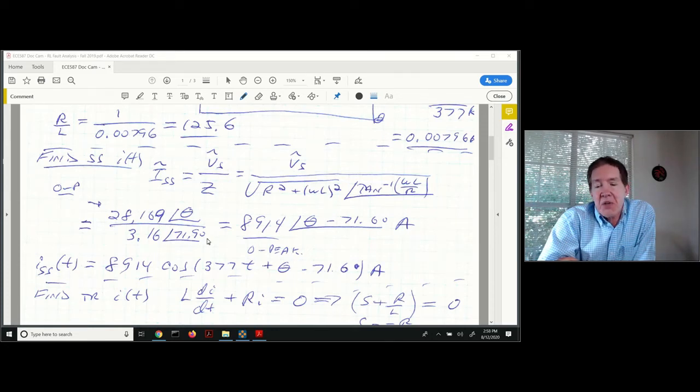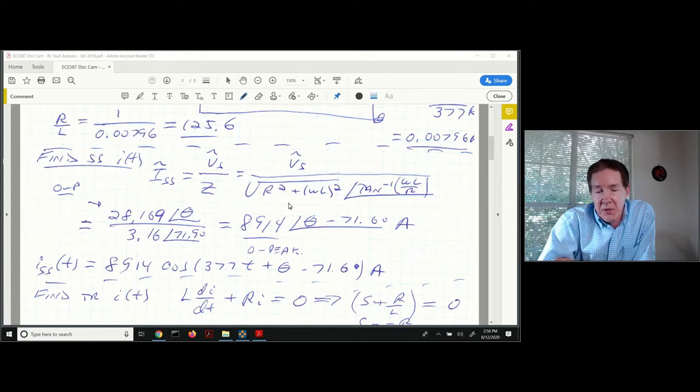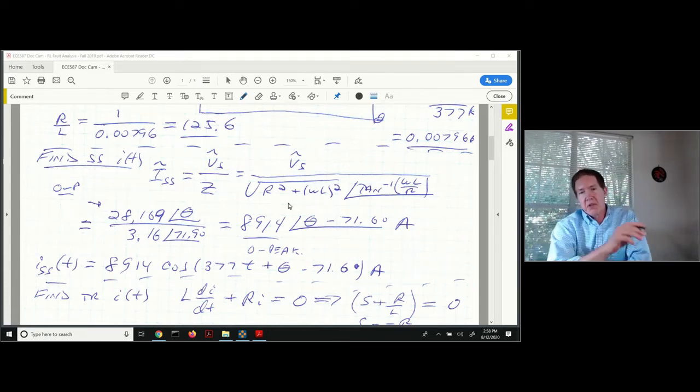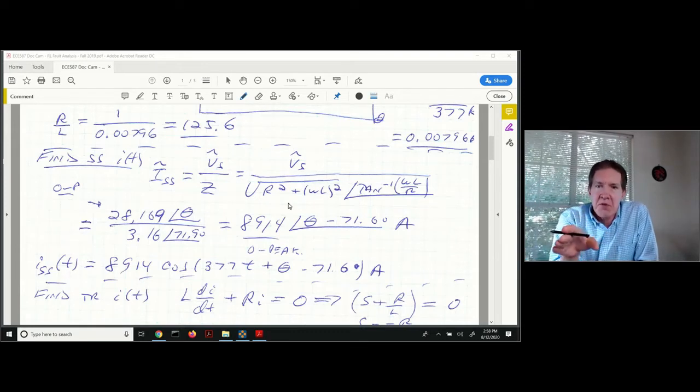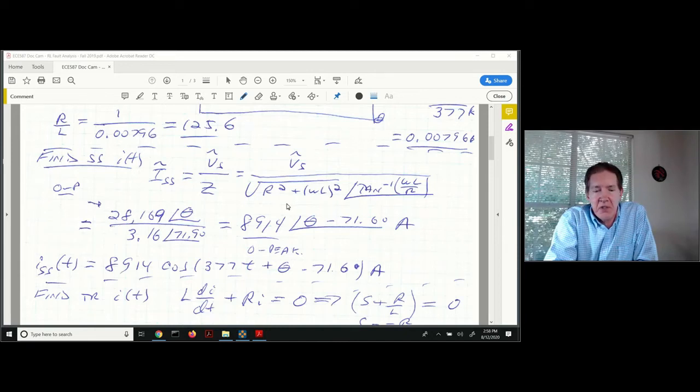The angle on the numerator corresponds with the point-of-wave angle of theta. I've got the angle of arctangent of omega L over R in the denominator. This gives me a steady state current with a zero to peak value of 8,914 at angle theta minus 71.6 degrees. In those waveforms I showed you before, this is what we would have in steady state.